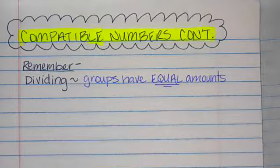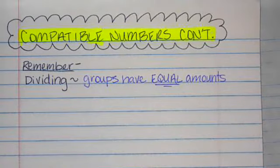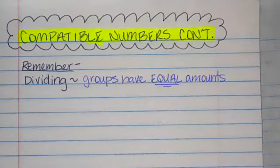We are going to be continuing on with the idea of dividing using compatible numbers with those fact families. Remember, we are finding estimates. We're not finding actual answers. We're just finding an answer that would be reasonable to our actual answer.